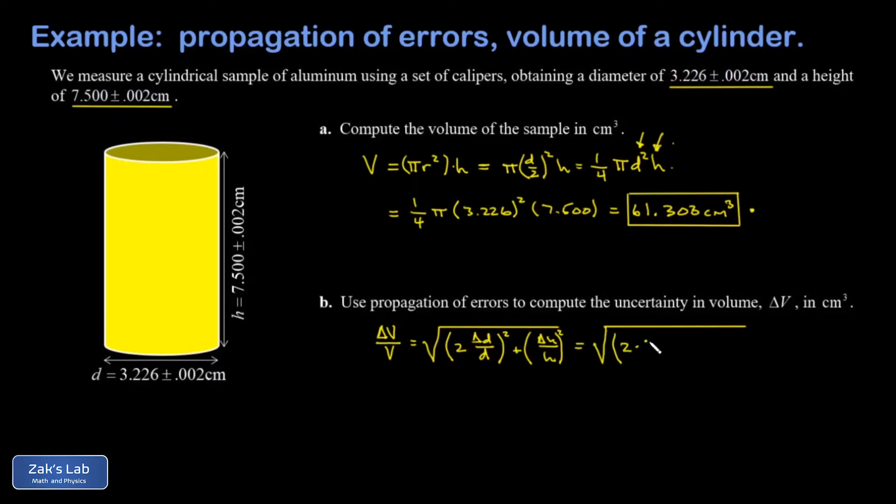We plug in the numbers: our uncertainty in the diameter was 0.002, the diameter itself 3.226, the uncertainty in the height 0.002, the height itself 7.500. And I get 0.00127.